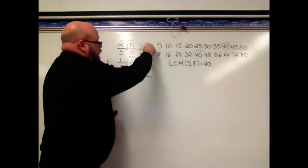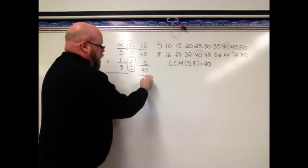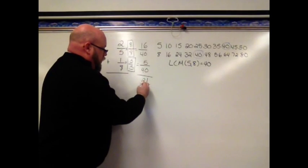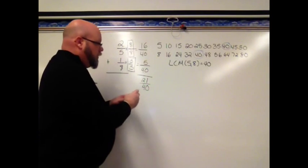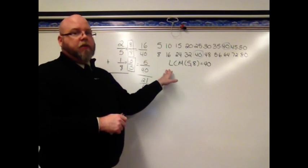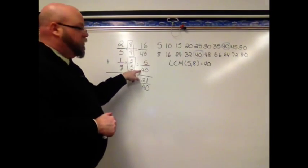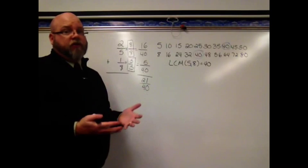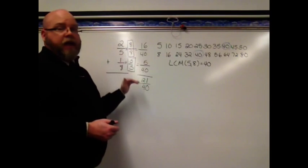Then I just add my numerators. 16 plus 5 is 21. And my denominators stay the same, 21 fortieths. So I'm using the least common multiple to make the least common denominator so that I have like fractions, fractions that have the same denominator, so I can add and subtract.